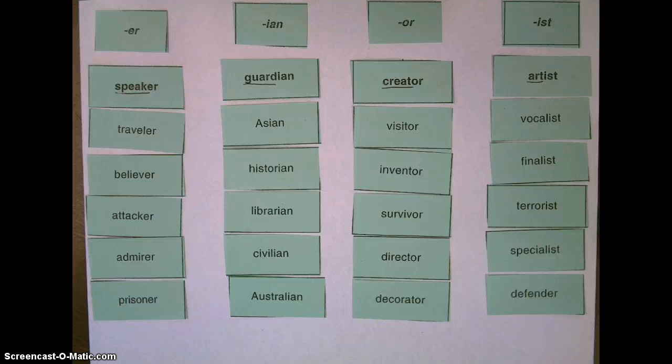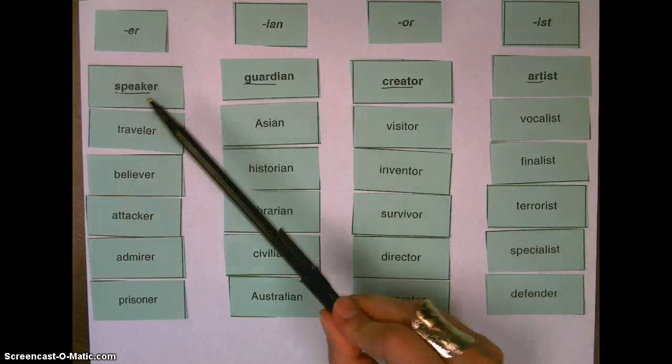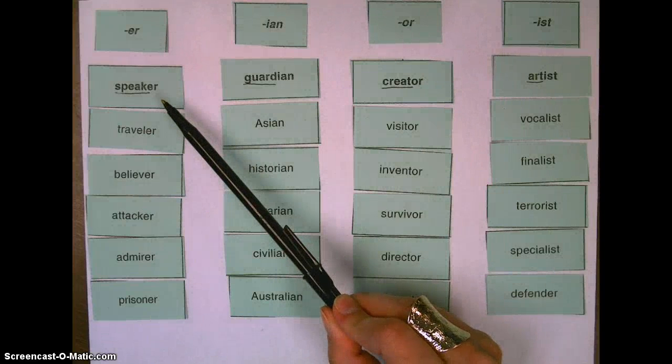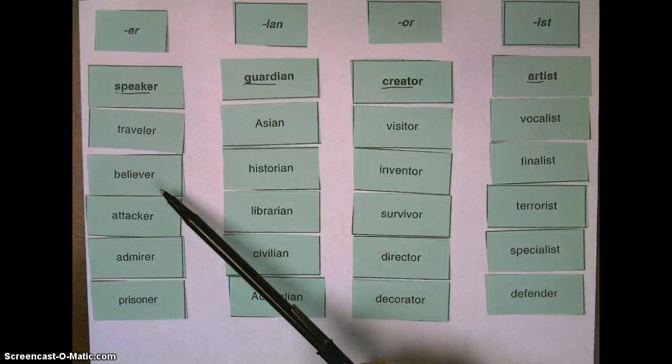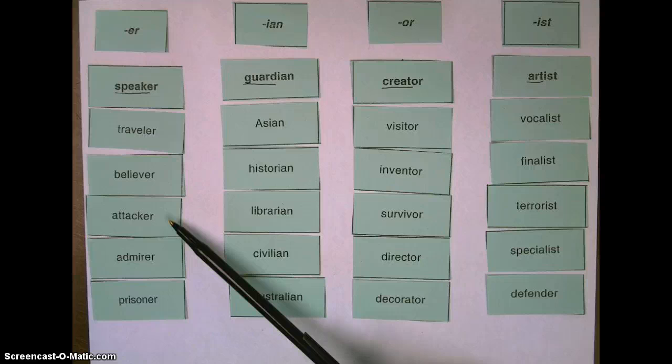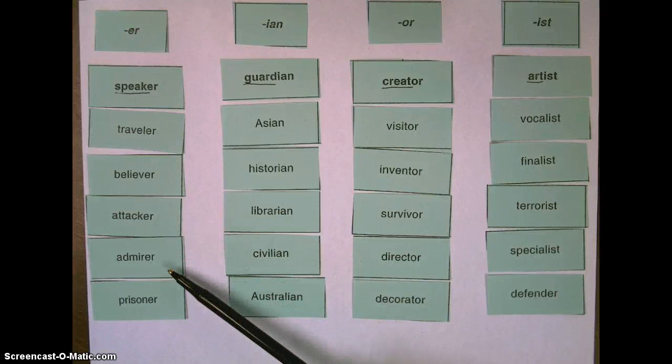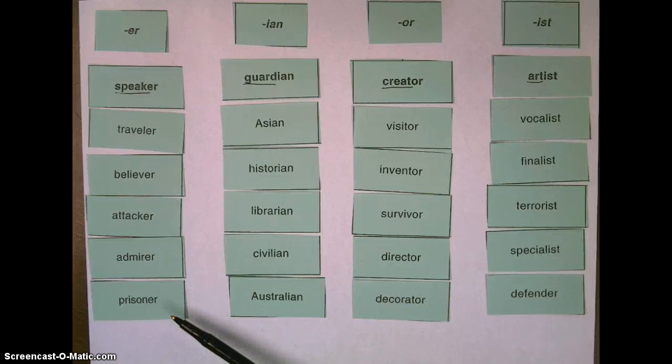Now that you've sorted your words, let's go through each column and make sure all of our words are in the correct spot. For er, we have speaker, traveler, believer, attacker, admirer, and prisoner.